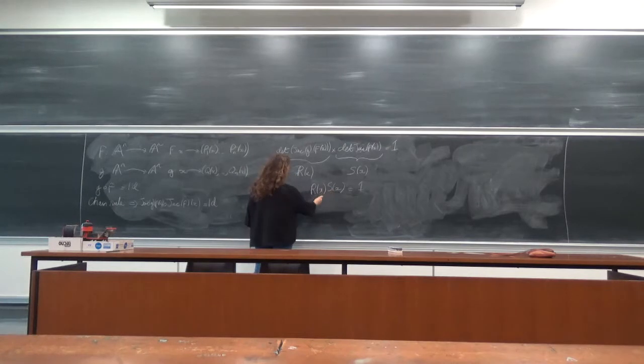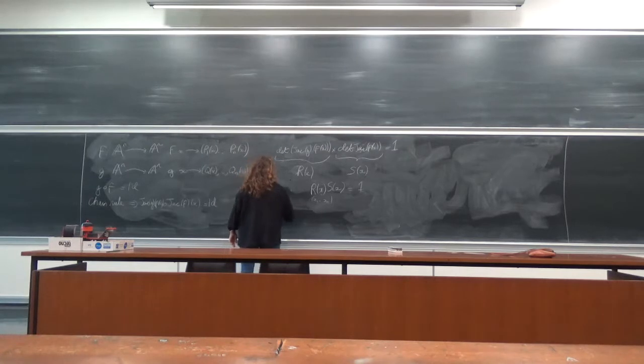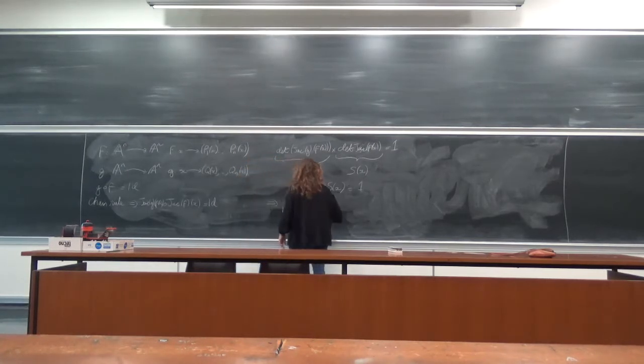And if this is only possible, it's obviously a multivariable of x here, x1, x2 up to xn. And this is obviously only possible if r of x and s of x are in fact constants.